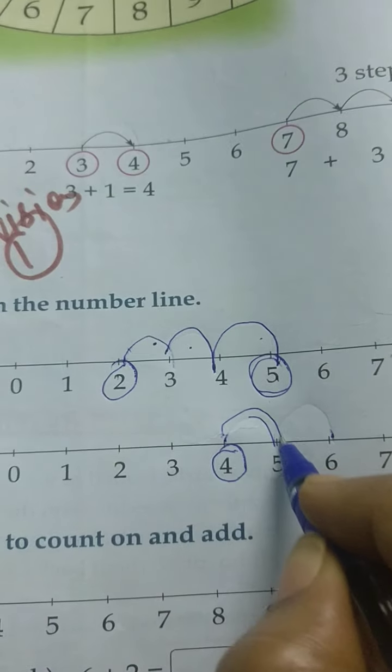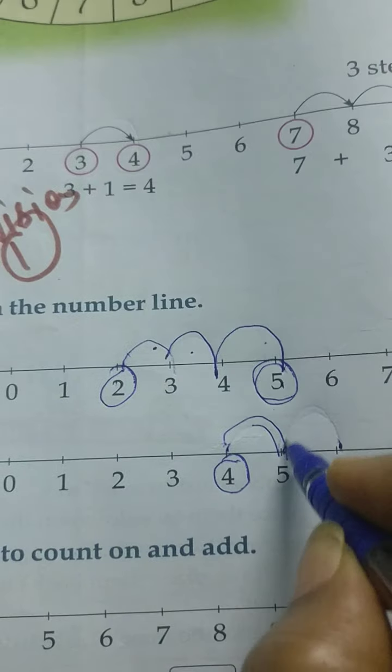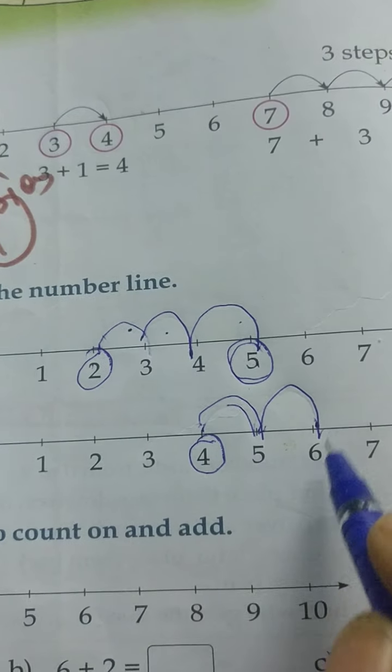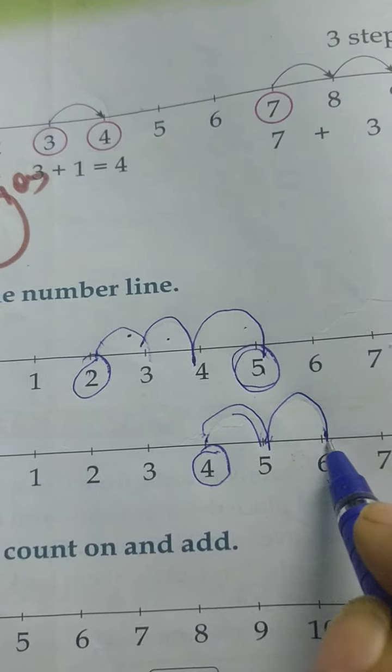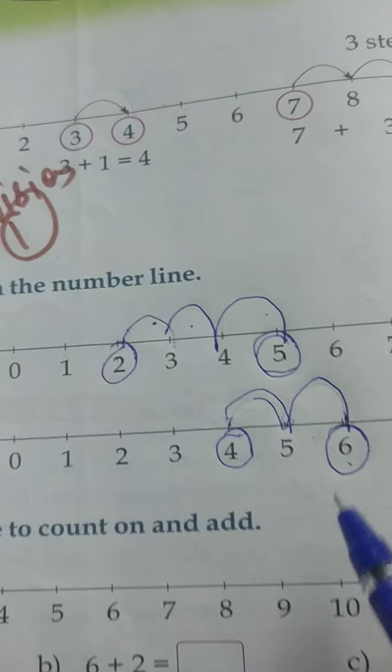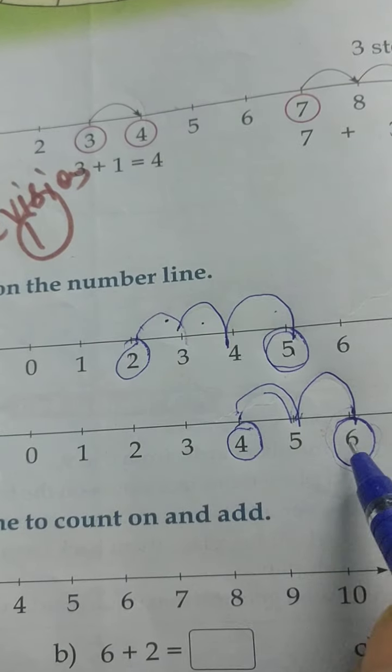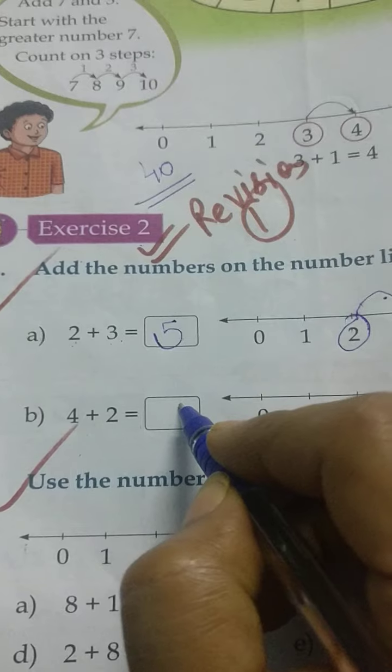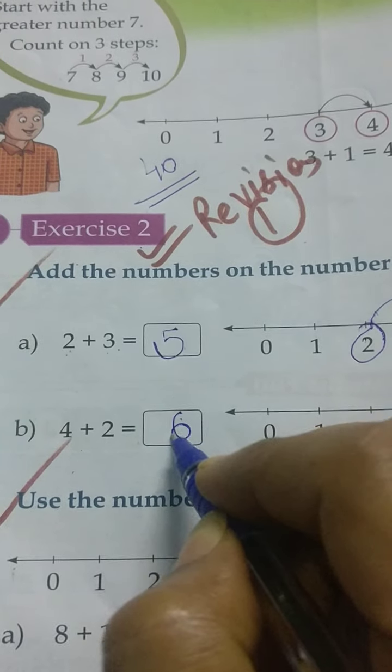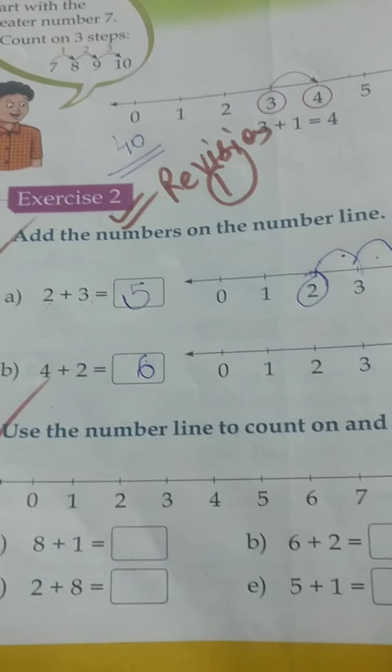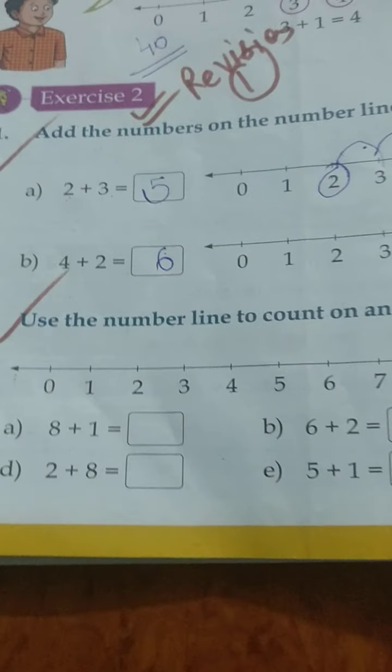1, 2. After 2 jumps, where are we standing? Where do we stop? On 6. Good. Put the circle on the number 6. So 4 plus 2 equals 6. Like this.